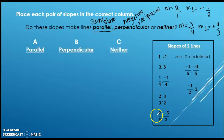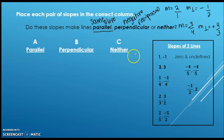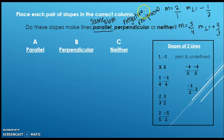Take a minute and look at these slopes. Go ahead and pause the recording and determine which pairs are parallel, perpendicular, or neither. Then hit play and see if you got the answers correct. For example, take the pair one and negative one and decide. Remember, neither means they're not the same slope and they're not negative reciprocals. With perpendicular, one has to be positive, one has to be negative, and fractions flip.